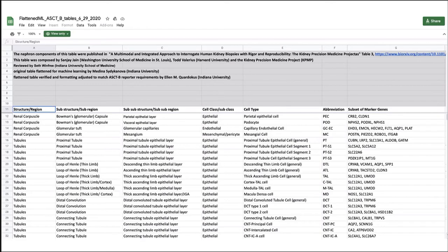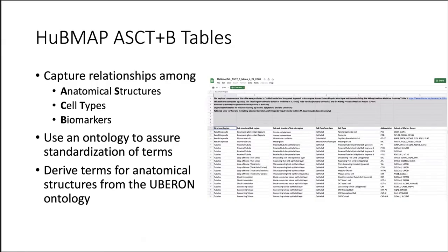The anatomical structures need to be represented explicitly, as do the cell types and the biomarkers. The use of standard ontology terms for all the components of the ASCT+B tables enables scientists to describe anatomical structures, cell types, and biomarkers with precision. People can search the tables using the ontology terms, and the use of ontology terms allows them to be confident that they can access all of the relevant data and evaluate all of the information that has been stored. The ASCT+B tables represent anatomical structures using terms from an ontology for vertebrate anatomy known as the Uberon ontology, or Uberon.